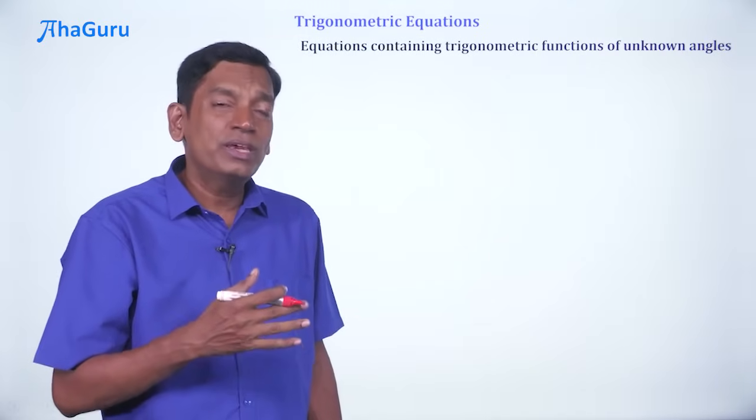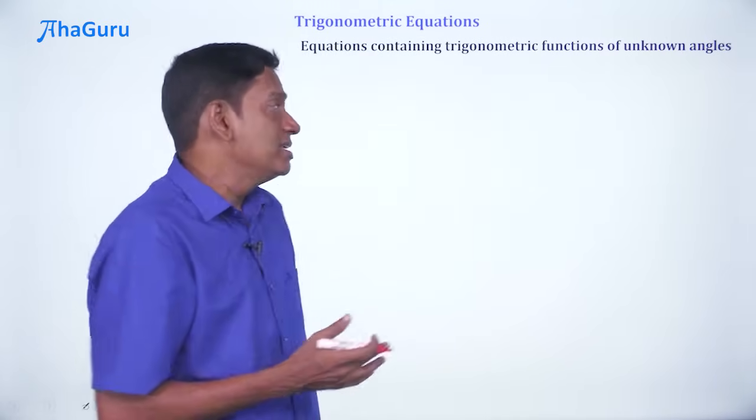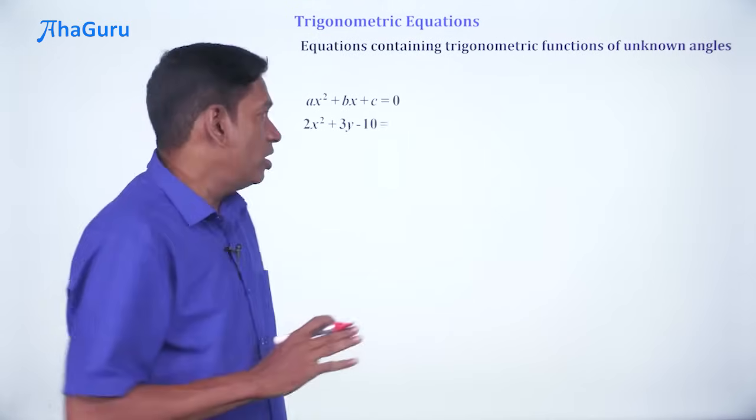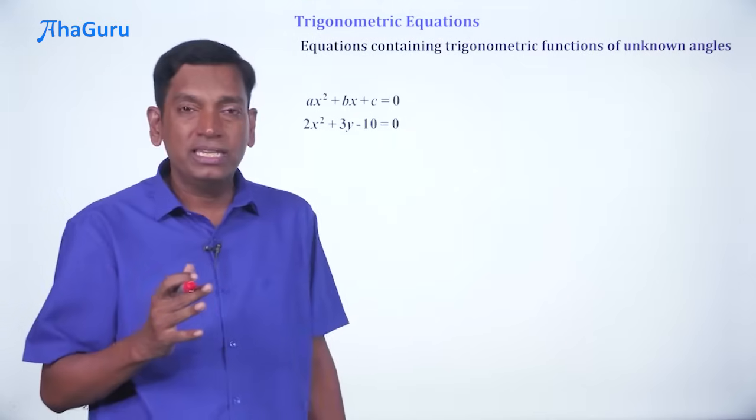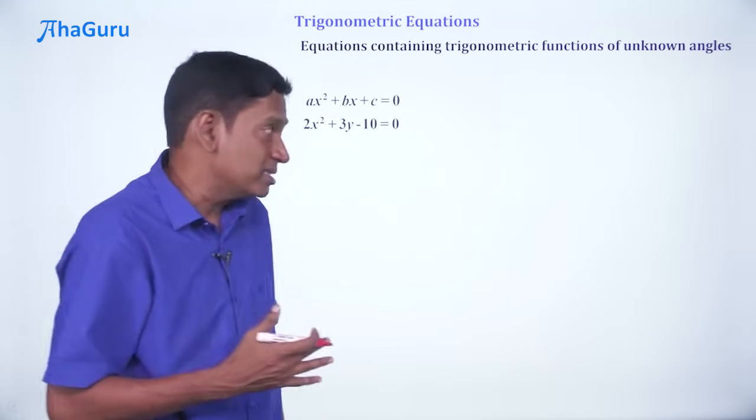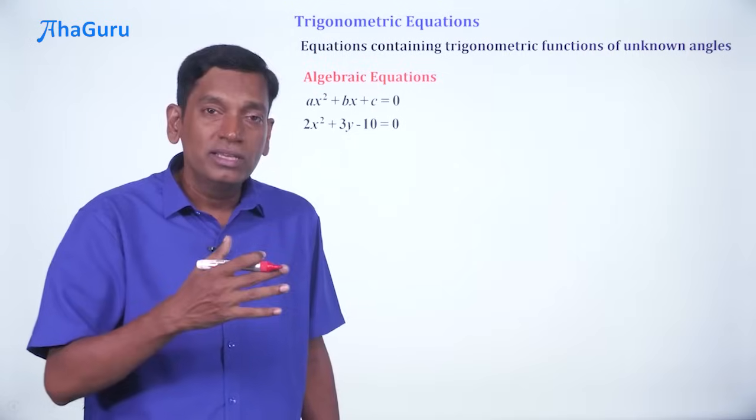Now, what kind of equations are we already familiar with? Something like ax² + bx + c = 0 or 2x² + 3y - 10 = 0, etc. These are all what we call algebraic equations. We know how to solve them.